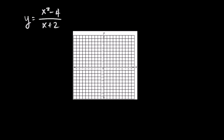So once again, make sure you factor first to see if x plus two really will give you the vertical asymptote, or if it will reduce and give you a hole. So y equals, and the numerator factors to x plus two, x minus two, all over x plus two.